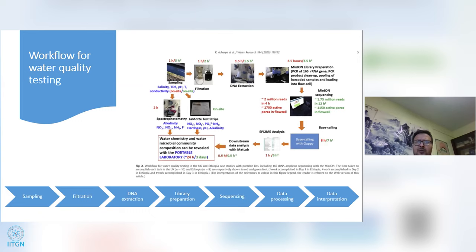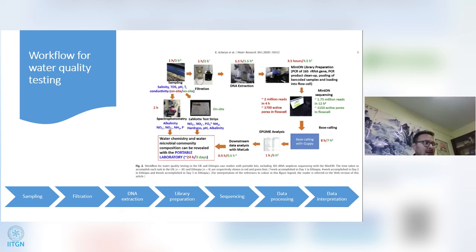Data processing is a critical step and can be a bottleneck. In the UK we could process the same amount of data in one hour, but it took approximately six hours in Ethiopia. The reason is internet speed — the internet in Ethiopia is not as fast as in the UK, and even using the fastest available connection it still took six hours. Overall, from sample collection to data, it may take up to two days depending on internet speed and distance between sampling sites.